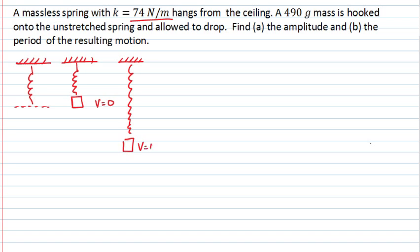Its final velocity will be zero and it'll start to undergo simple harmonic motion backwards and forwards about some new equilibrium position which is going to be halfway between those two points. We're asked to find the amplitude and the period of the resulting motion.